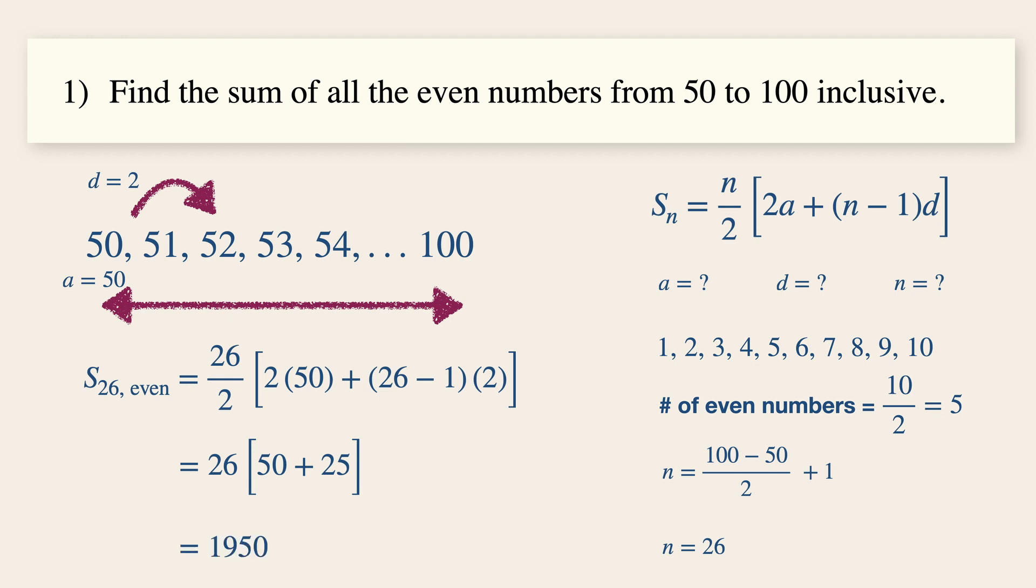Thus, the sum of all the even numbers between 50 to 100 inclusive is 1950.